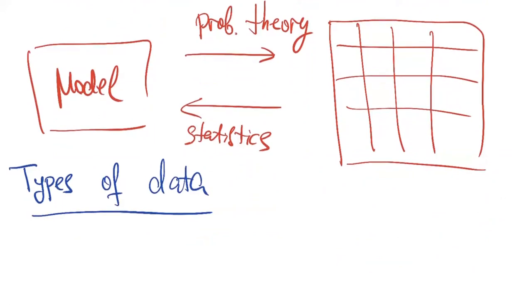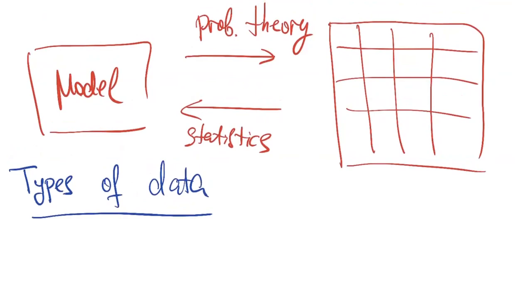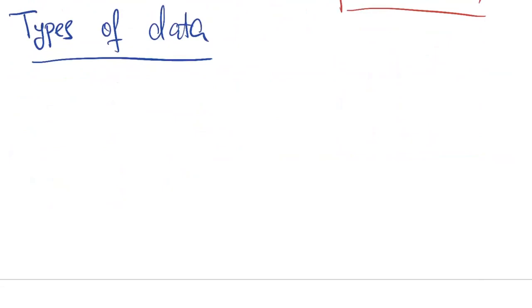When we deal with empirical data, we store it in a table with a well-defined structure. For example, assume we have some linguistic experiment — it is easier to think about a sociolinguistic experiment. In that case, we have several informants, several people whom we ask some questions about the use of language. We know something about these people and have their answers, and we store this kind of data in a table.